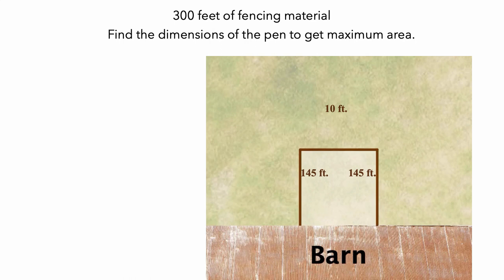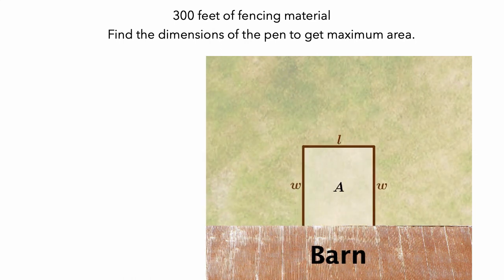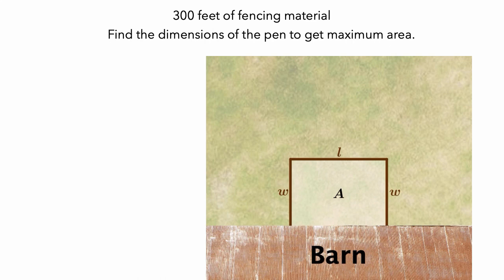Since the pen could have any of these dimensions, we can use variables to represent the quantities. We'll use L to represent the length of the pen, W to represent the width of the pen, and A to represent the area of the pen. These variables could take on any value as long as the length and width add to 300 feet. There are infinitely many options for the length and width, and we need to find the values that maximize the area.